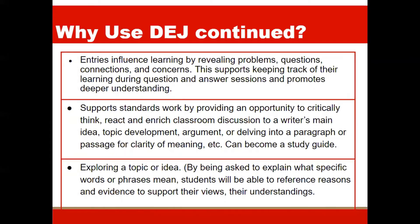Entries reveal problems, questions, connections, and concerns that students pull from their reading of the text. Responses and questions going through the student's head while reading are recorded in the right-side column. Journal entries need to be judged on the writer's ability to communicate and explore ideas, not on the quality of handwriting or the number of spelling or grammatical errors. Journal writing underscores informational learning and relieves the teacher of the burden of correcting errors so they can focus on student thinking. This enhances students' willingness to use the DEJ because they see it as a non-threatening tool for learning, and risk-taking under these conditions prompts deeper thinking to flow.